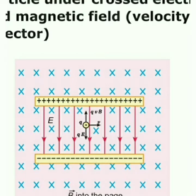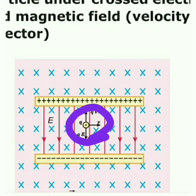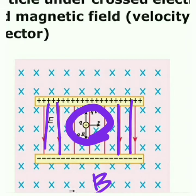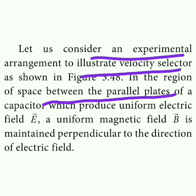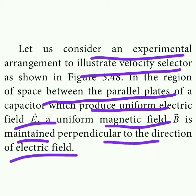This is the charged particle. This is the magnetic field and this is the electric field. This is the velocity selector — the region of space between a parallel plate capacitor where a uniform magnetic field is maintained perpendicular to the electric field.